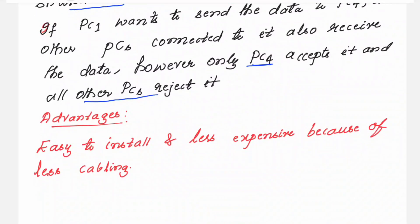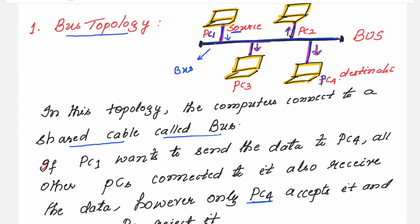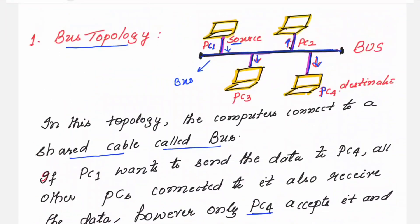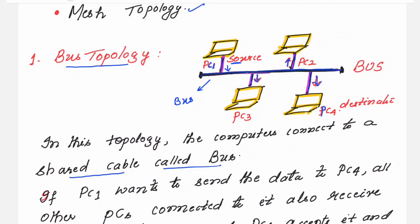For every topology you should also know the advantages and disadvantages. The first advantage of bus topology is that it is easy to install and less expensive, because you only require one cable to connect all the PCs. You can always keep adding PCs to the cable as and when you want.